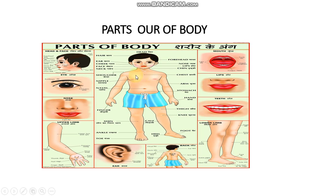Similarly, when you take the chest, we have: shoulders, nipple, nose, stomach, arms. These are the parts of our chest. Similarly, when you take the leg, we have: chin, ankle, toes, heel, foot, thigh. So you have these parts.